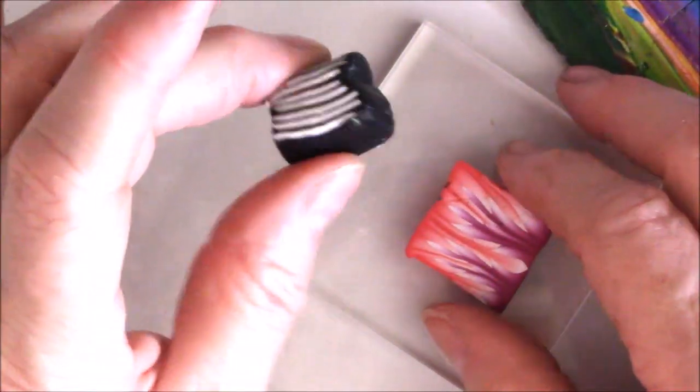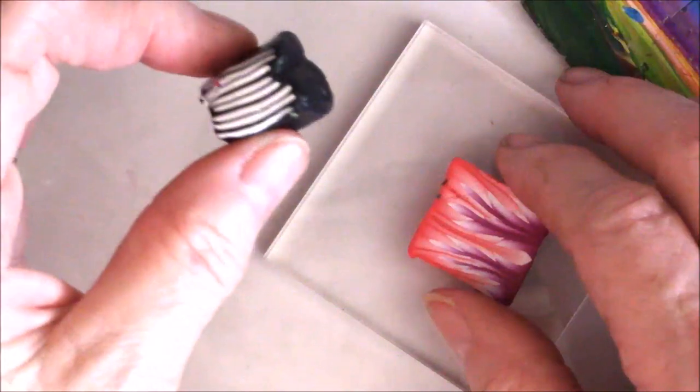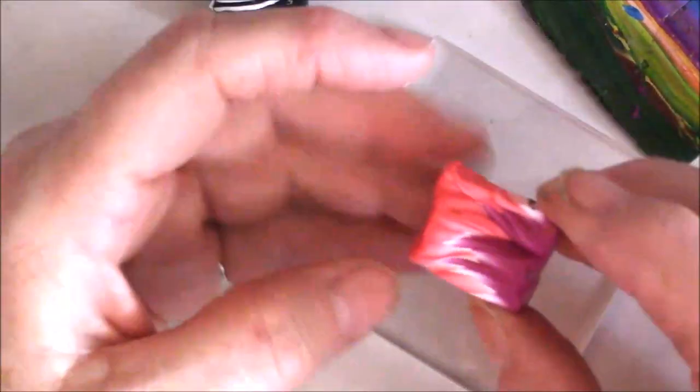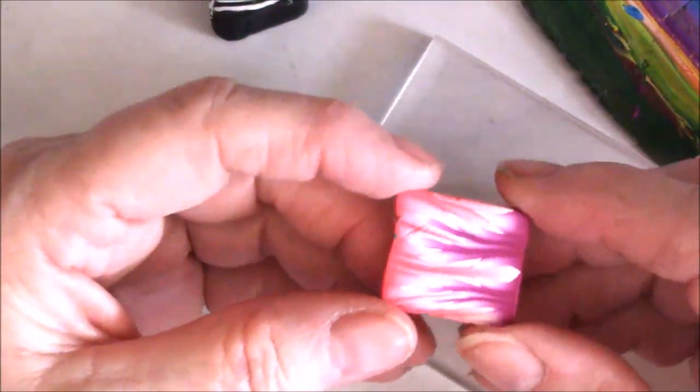This is from the landscape that we did. Here's a black and white stripe end of a cane that was cut off. This is the end of the flower petal cane that I did.